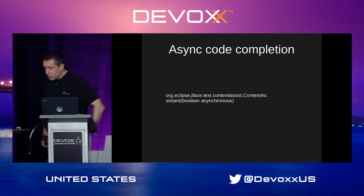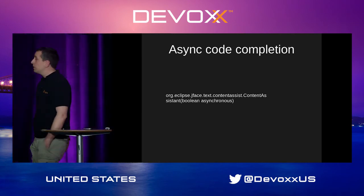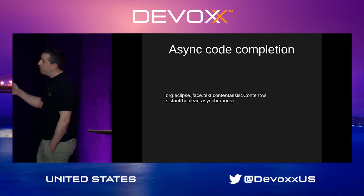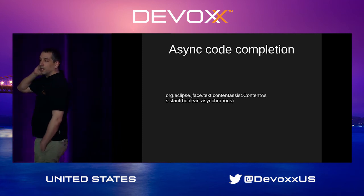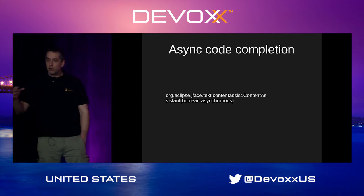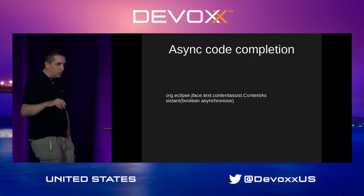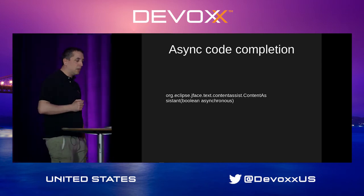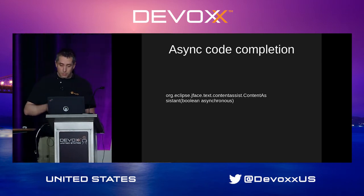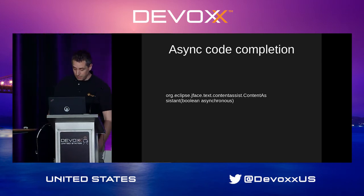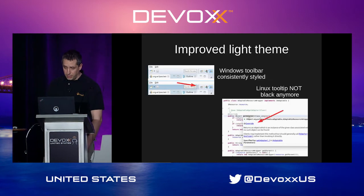We also offer asynchronous code completion. It's more or less a drop-in replacement — if your completion provider does not access the main thread, you can just put it outside of the main thread. Also done by Red Hat and already used by the generic editor.